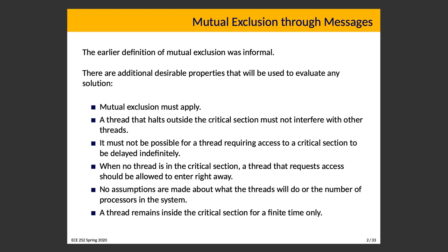Number four: when no thread is in the critical section, a thread that wants access should be allowed to enter right away — no unnecessary waiting. If a resource is desired and not in use, why shouldn't we get it immediately? Number five: no assumptions are made about what threads will do or the number of processors. We need a general solution, not one that only works for exactly three threads following a specific pattern.